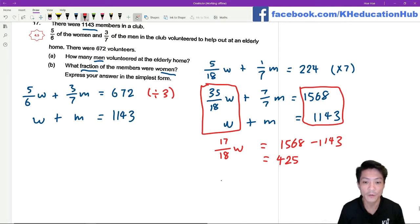To find the number of women we're gonna use 425 divided by 17 and multiply by 18, which will give me 450.